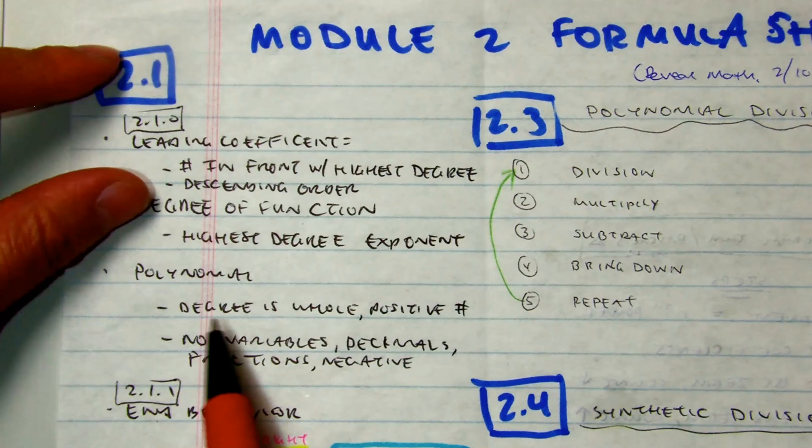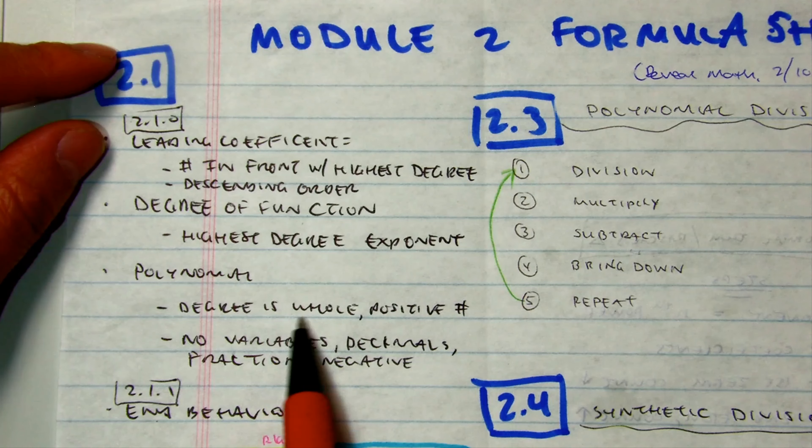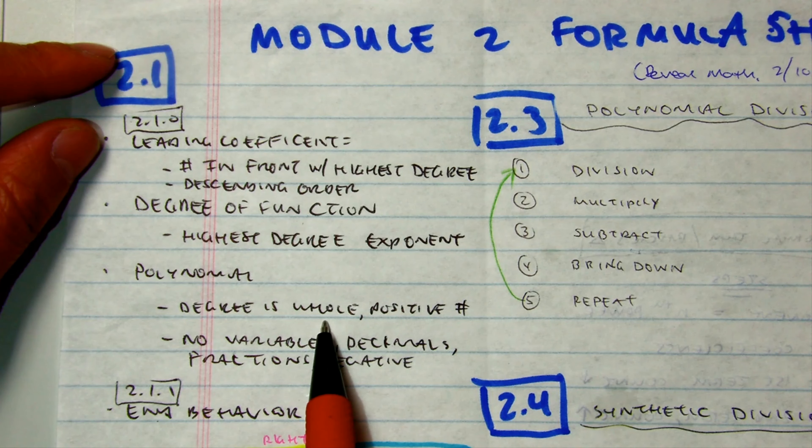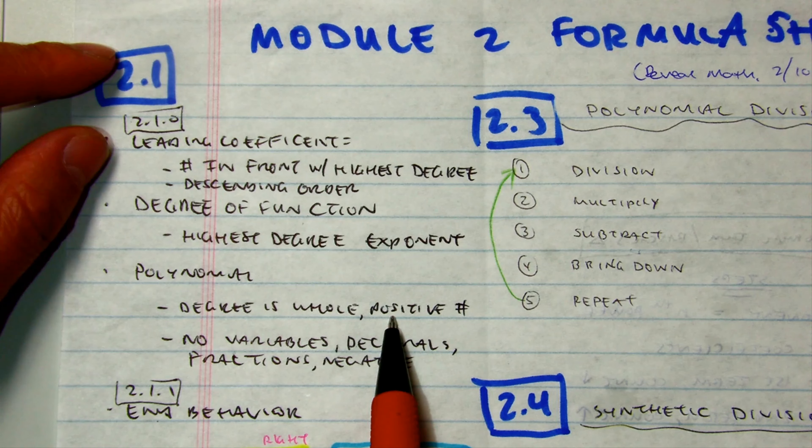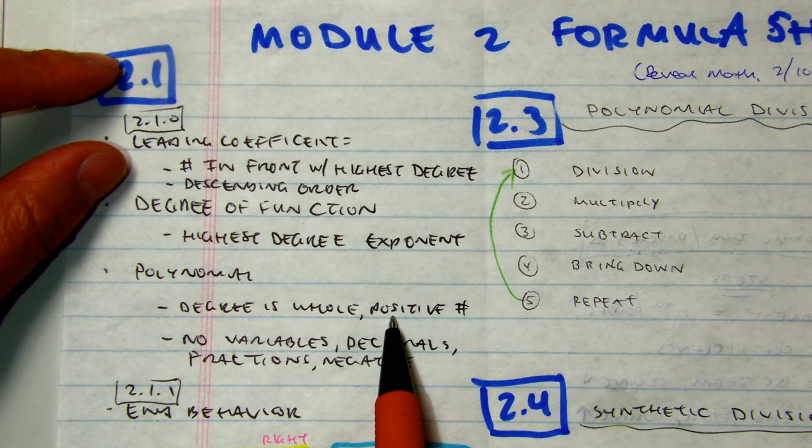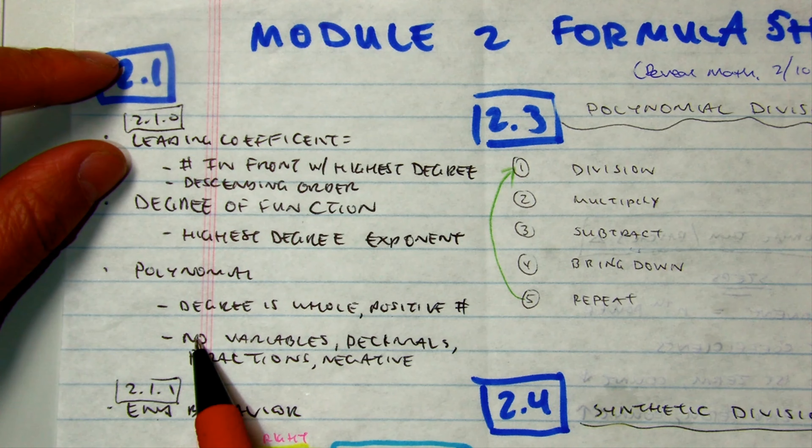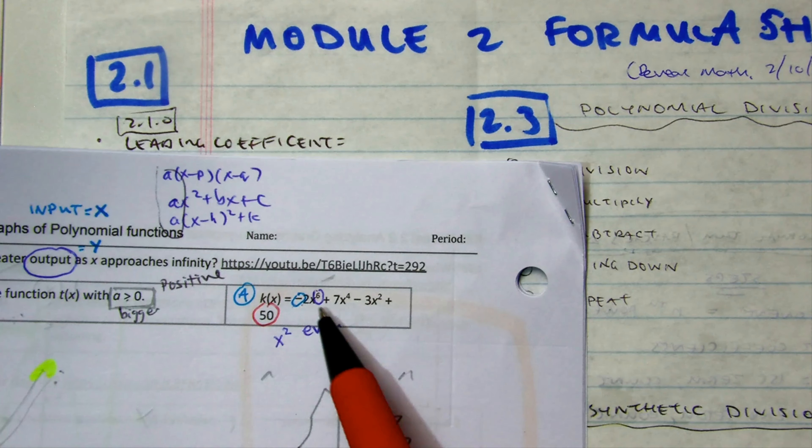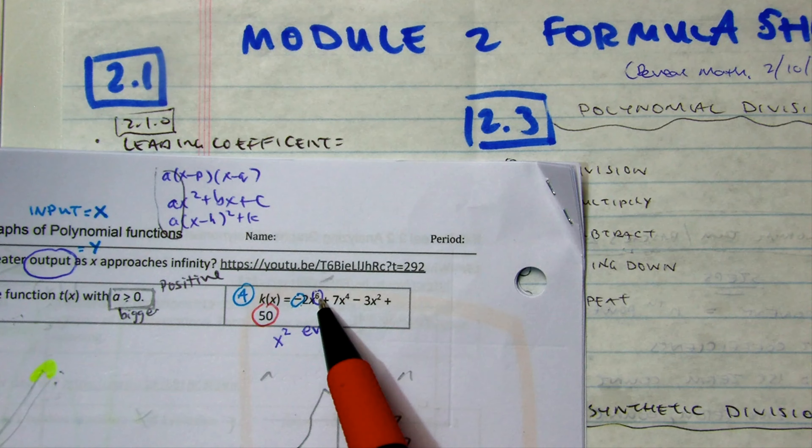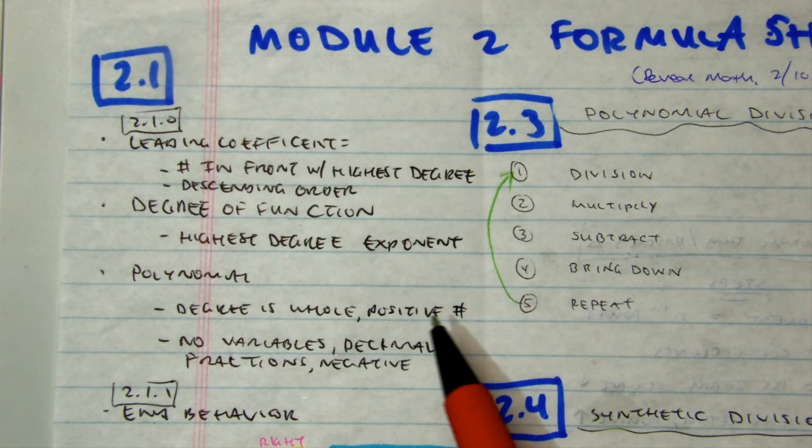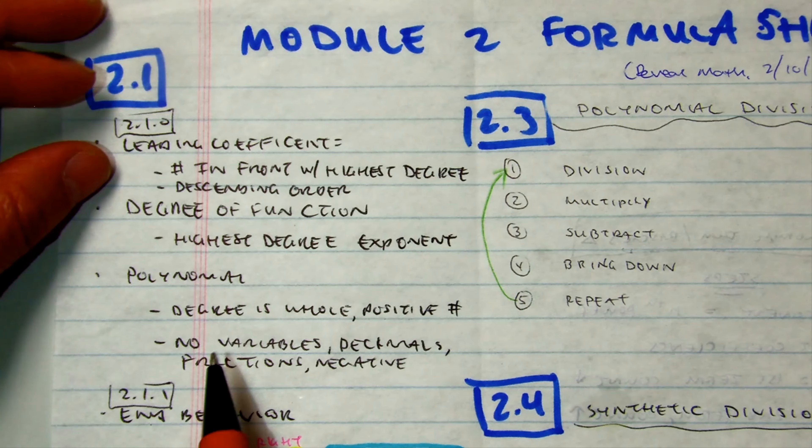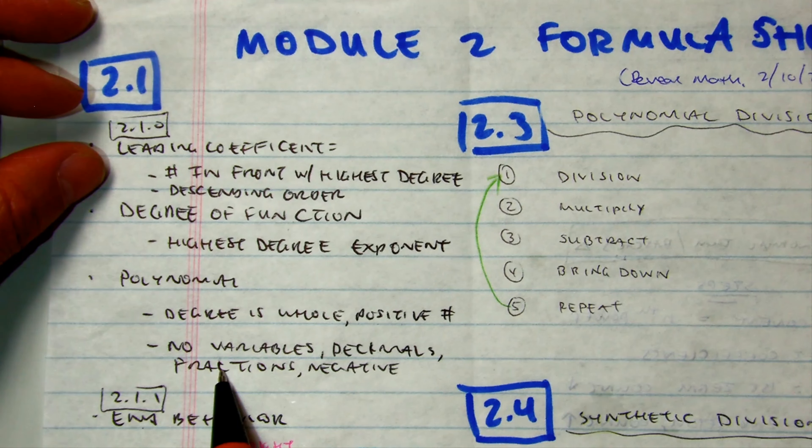What is a polynomial? A polynomial has a degree that is a whole number. It's a positive number. They're numbers with a base of x. In the top right there, notice that these numbers are whole numbers. They can't be negative. That's why it says positive. They can't be variables, decimals, fractions, or negative.